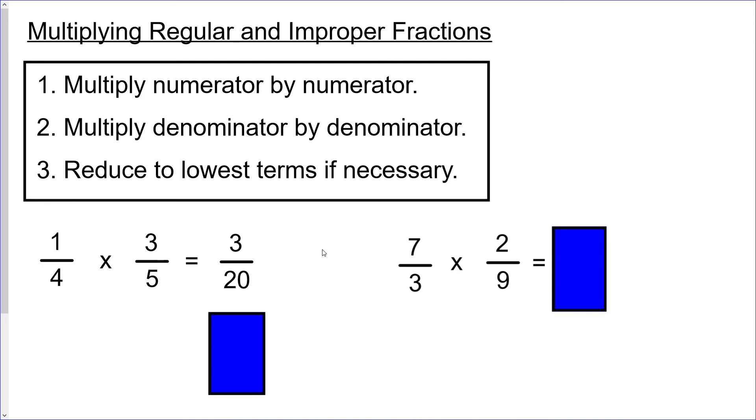The second one here, we do the same thing. 7 times 2 equals 14, 3 times 9 equals 27. And in both these situations it's already in lowest terms so there's nothing else you can do with those.